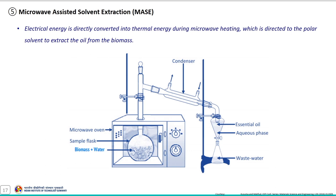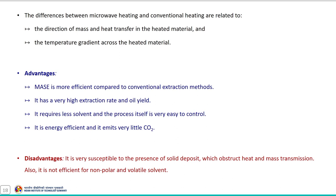Another important technique is microwave assisted solvent extraction. In this process, electrical energy is directly converted into thermal energy during microwave heating, which is directed to the polar solvent to extract the oil from the biomass matrix. The solvent along with the extracted components is condensed and allowed to separate to form an aqueous phase and an oily phase. The main difference between microwave heating and conventional heating is related to the direction of mass and heat transfer and the temperature gradient across the heated material.